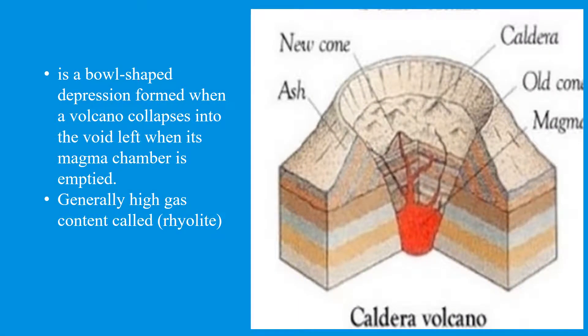A caldera volcano is a bowl-shaped depression formed when a volcano collapses into the void left when its magma chamber is empty. It also has the highest gas content, which is called rhyolite.